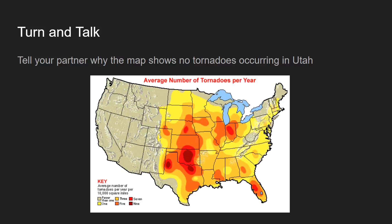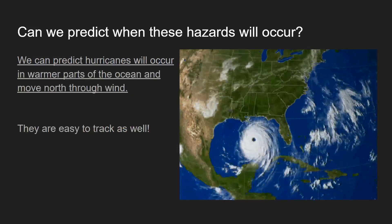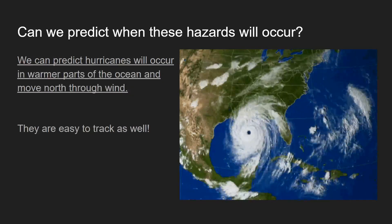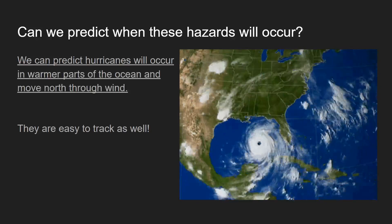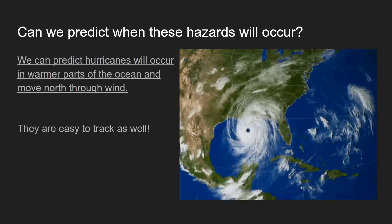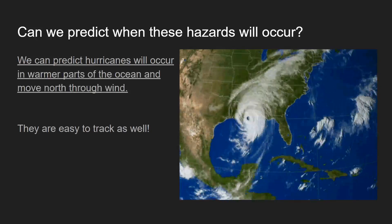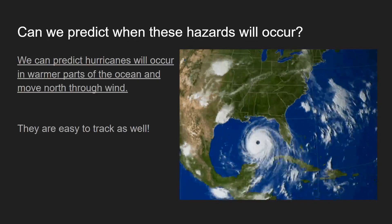There are a few exceptions — there was a tornado around 2002 at the Delta Center, or Energy Solutions, wherever the Jazz play now — but it's very, very rare to have a tornado here.